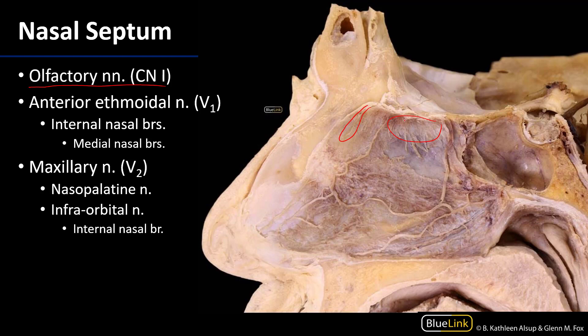Here we can see cranial nerve 1, and here we can see branches of V1 — the ophthalmic division. The remainder of the septum is going to be innervated by branches of V2.